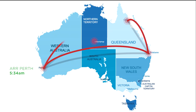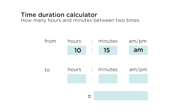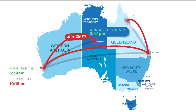From Perth, she's going to Alice Springs, flying out at 10.15am and landing in Alice Springs at 2.44pm. So how long is that flight? Using the time calculator, it gives 4 hours and 29 minutes. That seems like a long flight. That's because Alice Springs time is an hour and a half ahead of Perth. So I have to subtract an hour and a half from the flight time — it actually only takes her 2 hours and 59 minutes.